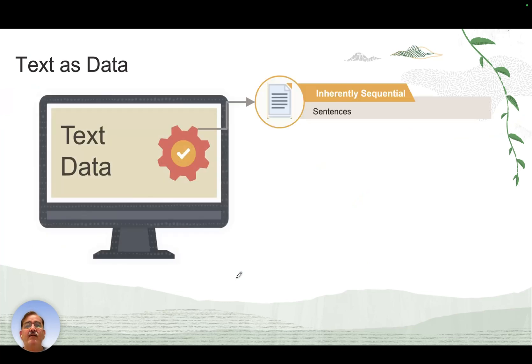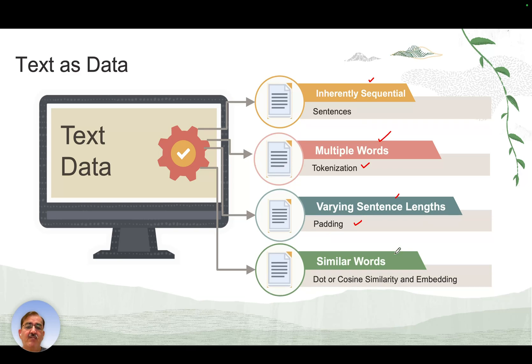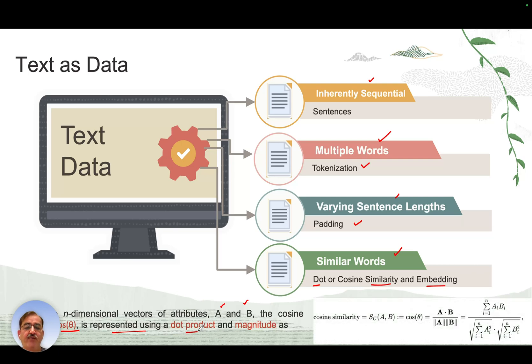Text as data is inherently sequential in the form of sentences. We use tokenization for multiple words and padding for varying sentence lengths. For similar words, we use dot or cosine similarity and embeddings to compare. If we have n-dimensional vectors of magnitude a and b, the cosine similarity (cos θ) can be represented as: cos θ = a·b / (|a| × |b|), where a·b is the dot product and |a| × |b| is the product of their magnitudes.